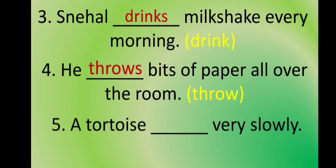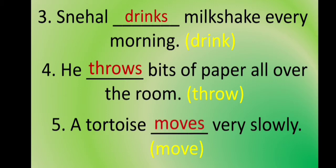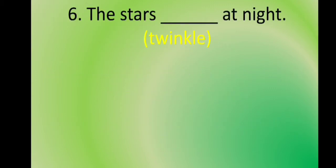The next statement is: A tortoise ___ very slowly. The verb is 'move.' The subject is 'a tortoise,' which is singular, so we use the verb's S form. The answer is: A tortoise moves very slowly.